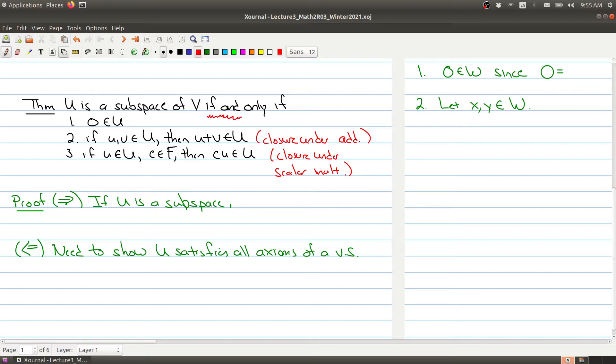Now this is an if and only if statement, so this means we have two things to prove. We have to prove that if U is a subspace then these three criterion are true. And then we have to show that if we have these three criterion about U, then U is also a subspace of V. Now one direction is straightforward: if U is a subspace that means it is a vector space.